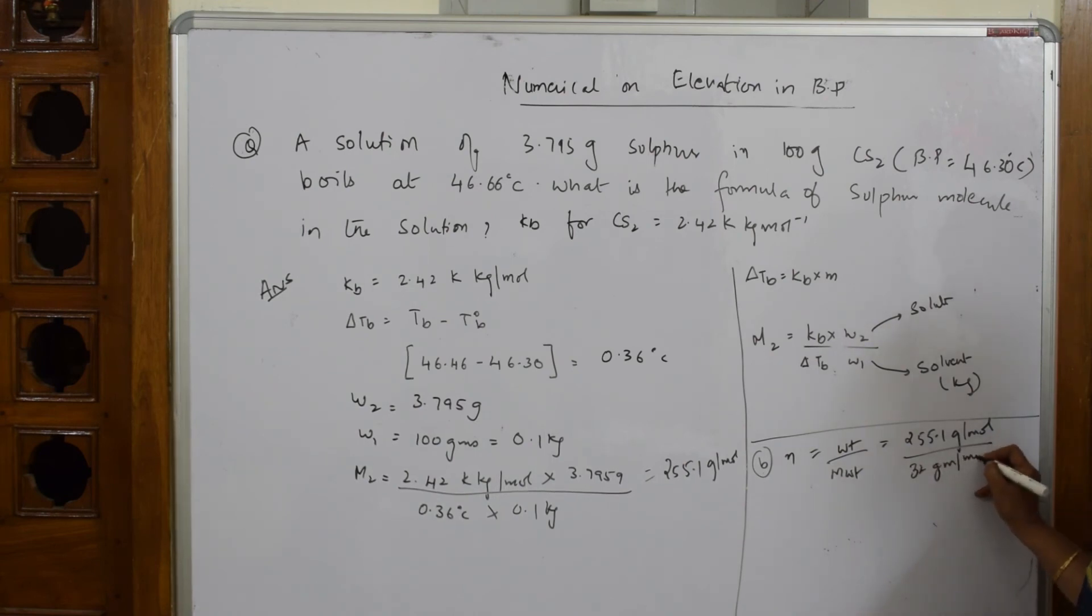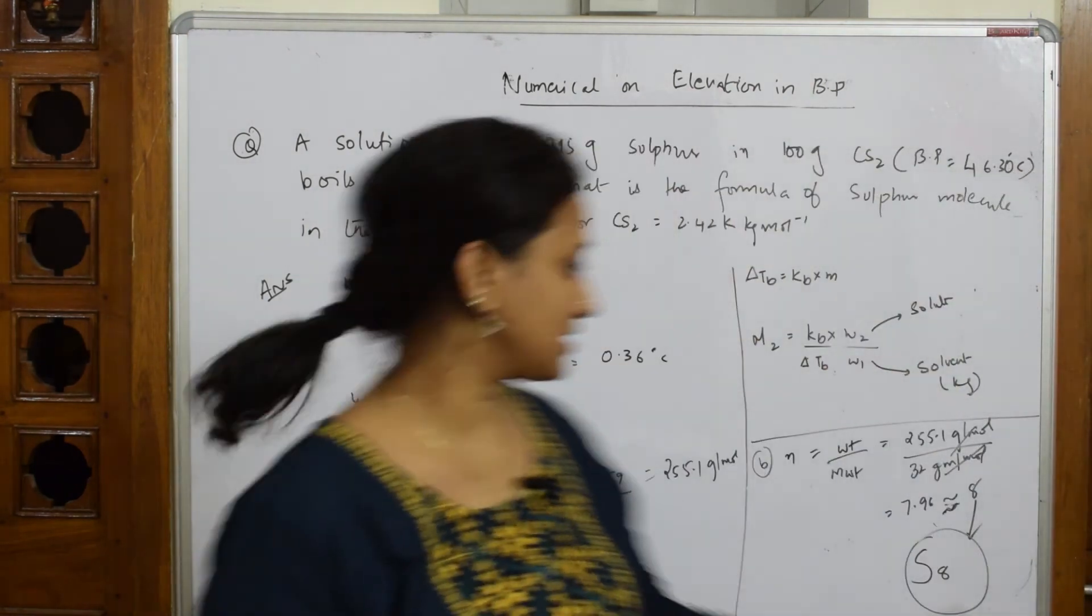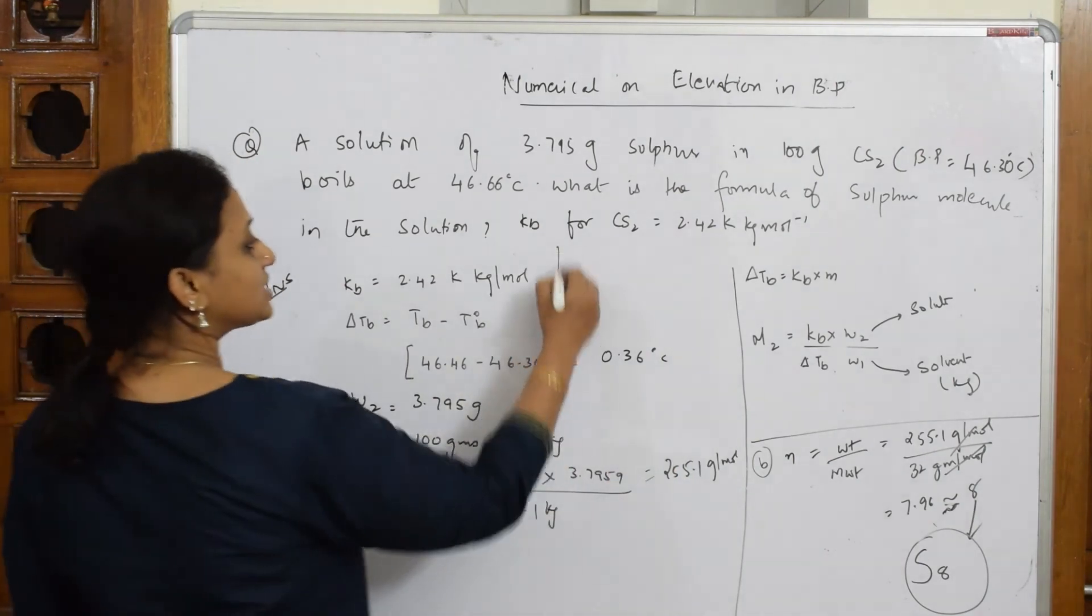So gram per mole, gram per mole gets cancelled, and I get an answer of almost 7.96 or something, which is approximately with the significant figures I make it equal to 8. So the formula they want us to write, the formula which I've got is 8. That is why sulfur exists as S8 molecule. This is important. S8 we have got in this way.